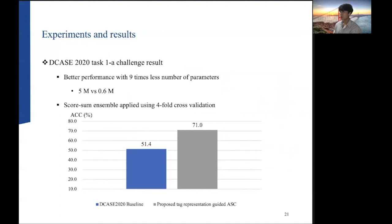This slide shows the result of the challenge for the DCASE 2020 Task 1A. Our proposed system reports better performance with a nine times less number of parameters compared to the DCASE 2020 baseline. Score-sum ensemble was applied using 4-fold cross validation of our proposed system and recorded 71.0% accuracy.